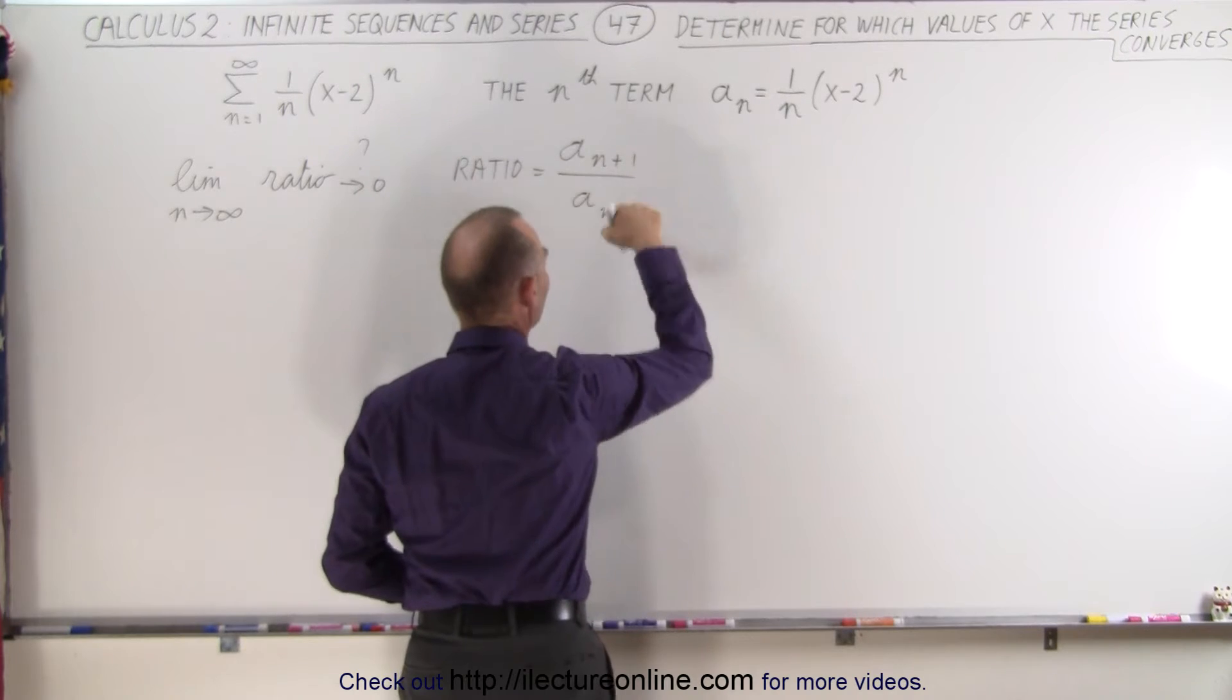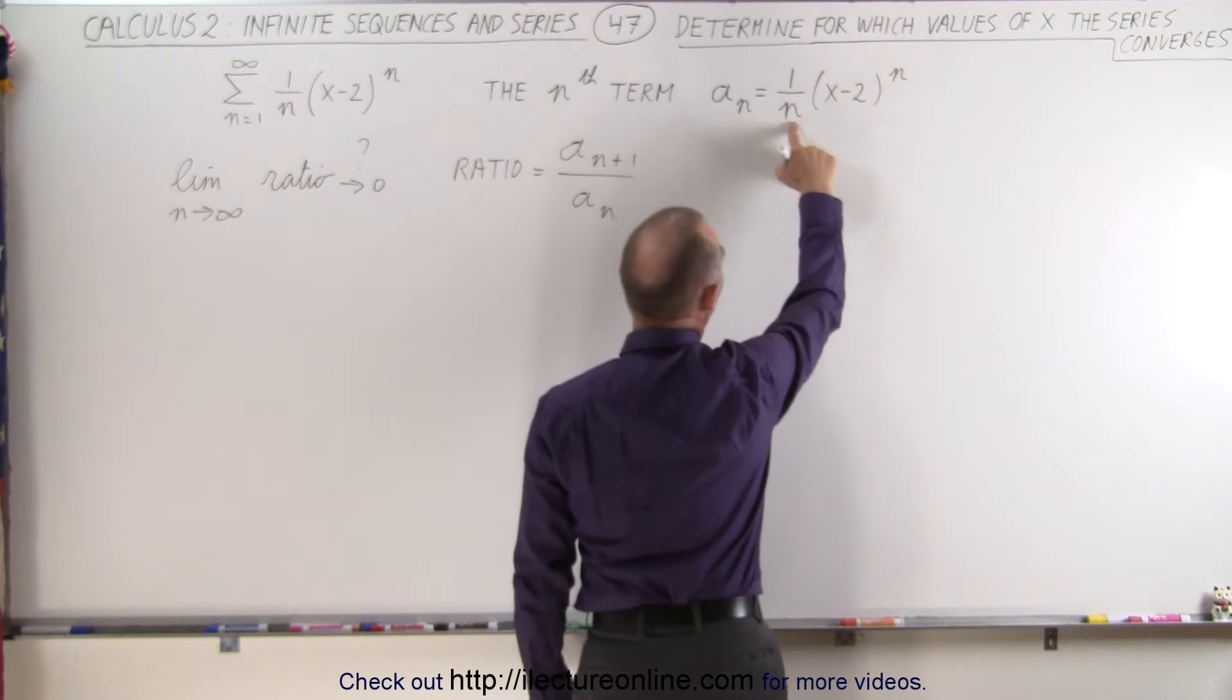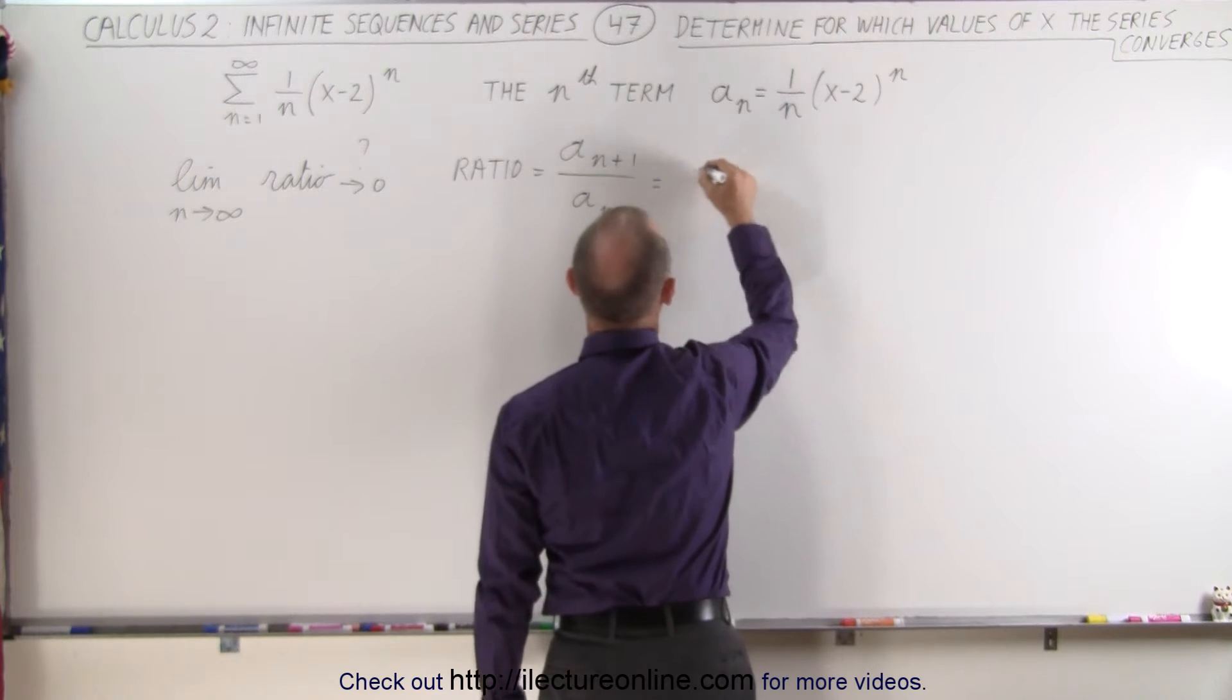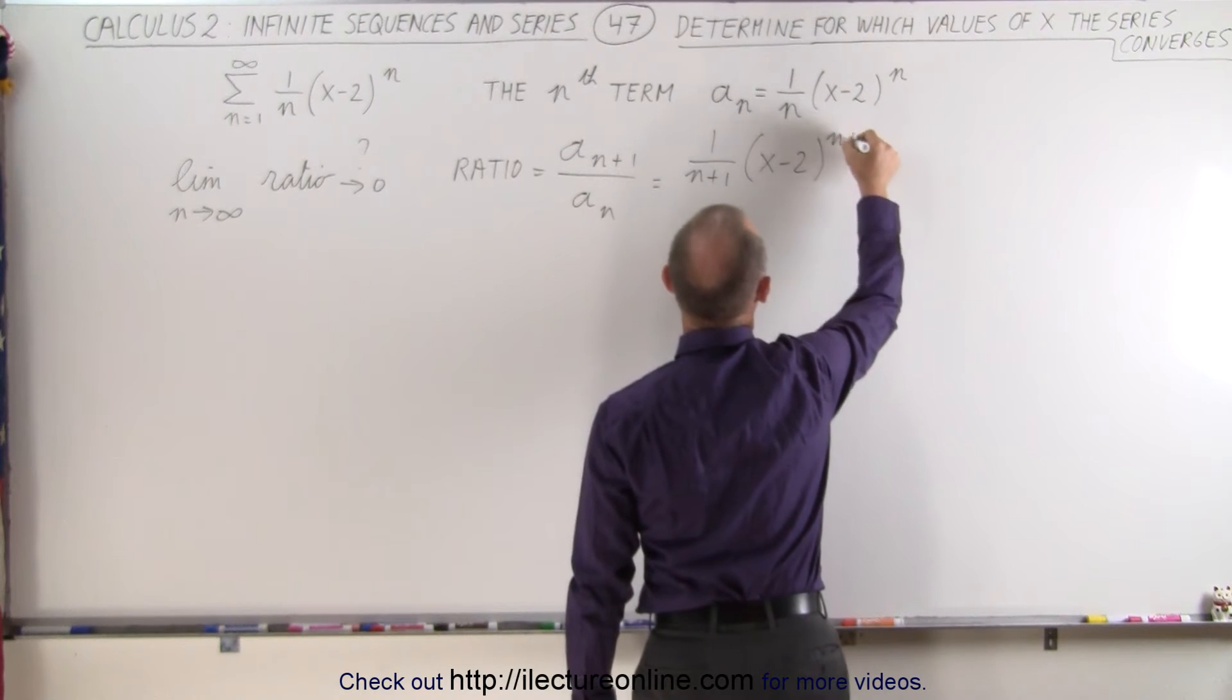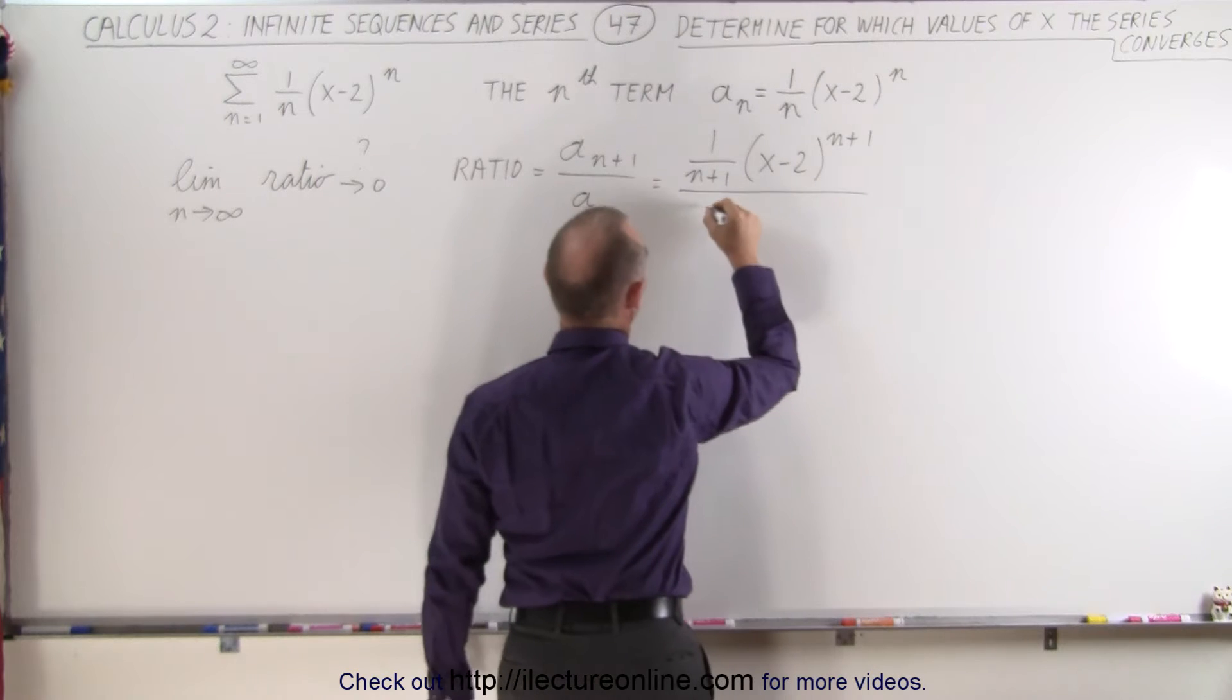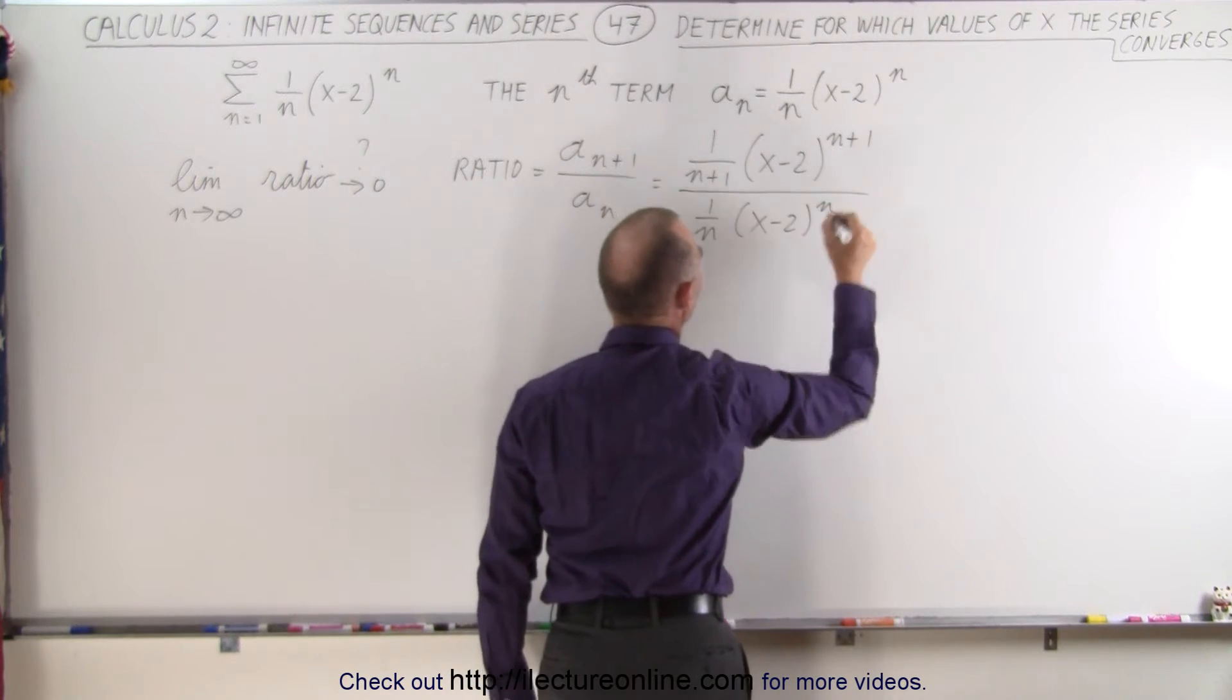So the next term in the series divided by the previous term. We're going to add 1 to every n. So that is equal to 1 over n plus 1 times x minus 2 to the n plus 1 power, divided by this term which is 1 over n times x minus 2 to the n power.